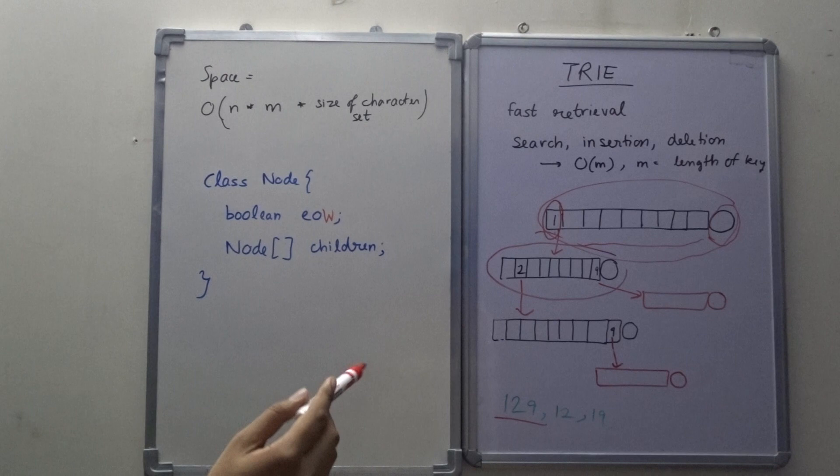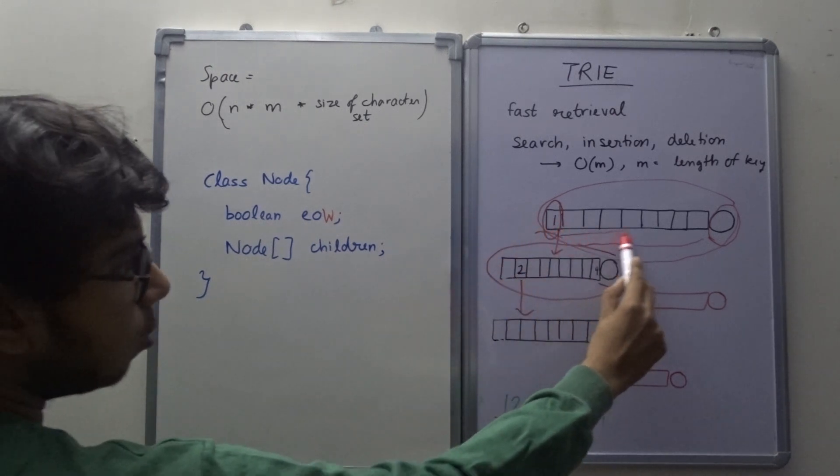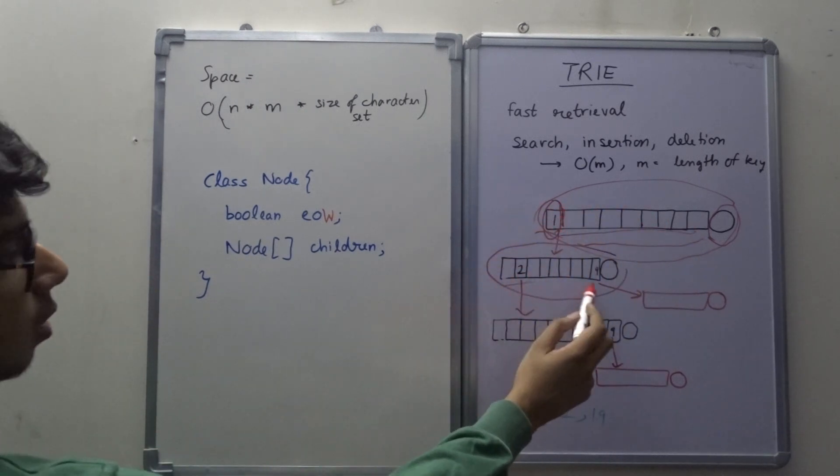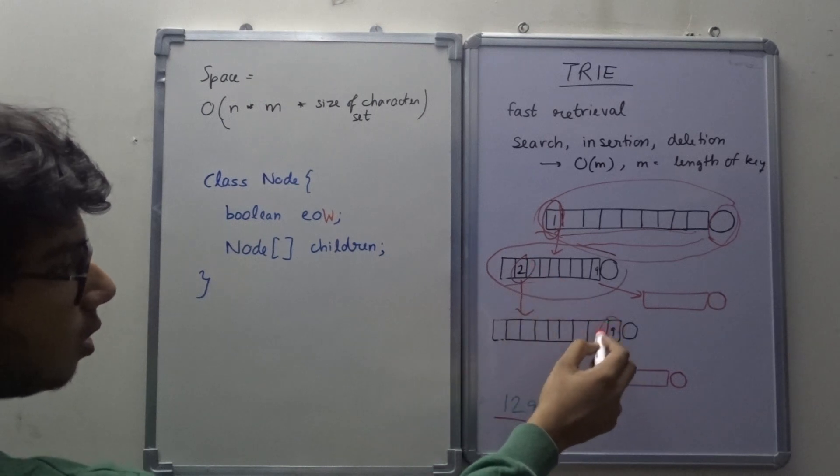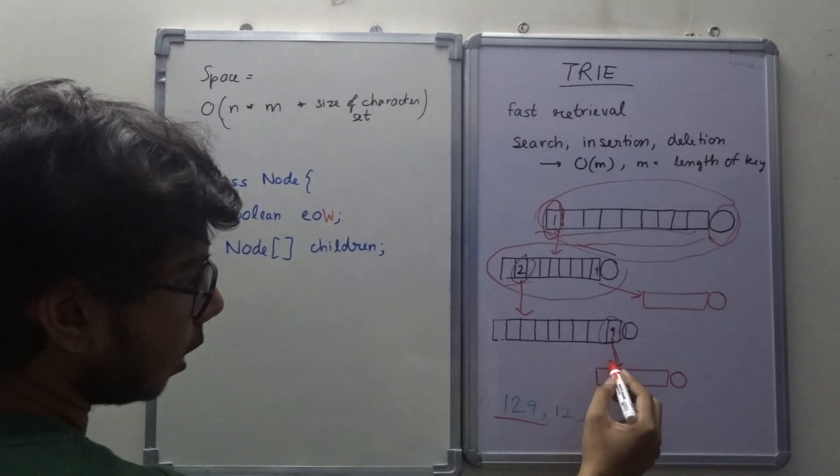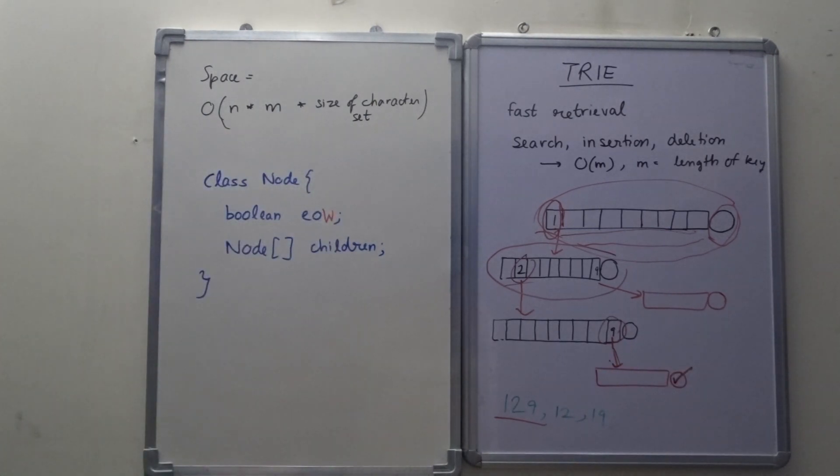So effectively, I have created a key 129 because all of the other nodes are null and only this node is not null. And similarly here, only this node is not null and only this node is not null. So effectively, and here in the child of 9, I will mark it as end of word. So I will know that I have a key 129 in the Trie.